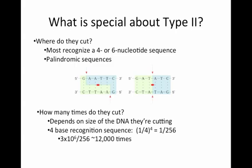If you think about the fact that the E. coli genome is roughly 3 million base pairs, you'd expect that a restriction enzyme recognizing a 4 base sequence would cut the E. coli chromosome about 12,000 times.